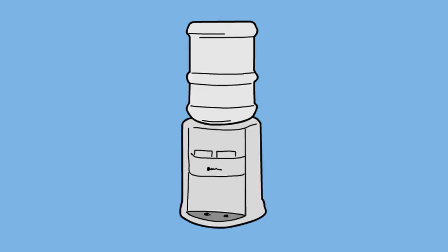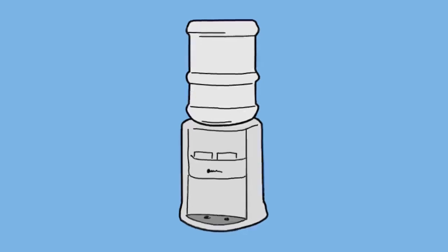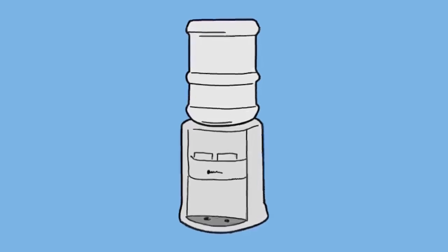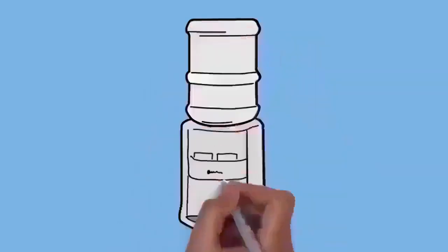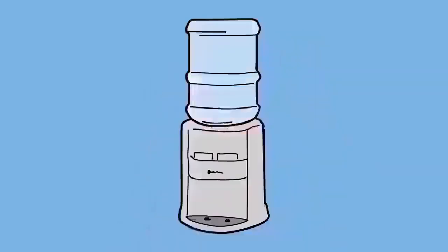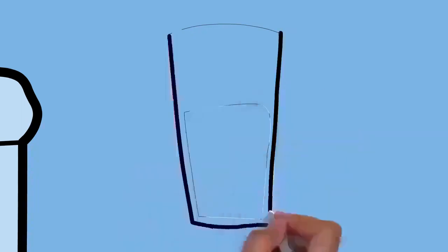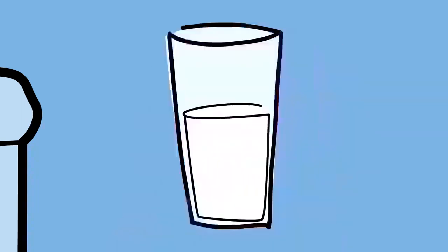Water regulates the Earth's temperature. It also regulates the temperature of the human body, carries nutrients and oxygen to cells, cushions joints, protects organs and tissues, and removes wastes. 75% of the human brain is water and 75% of a living tree is water. A person can live about a month without food, but only about a week without water.